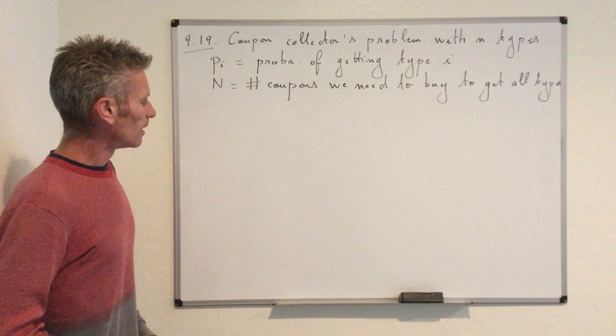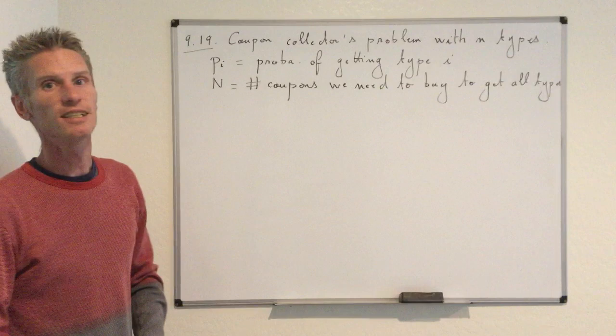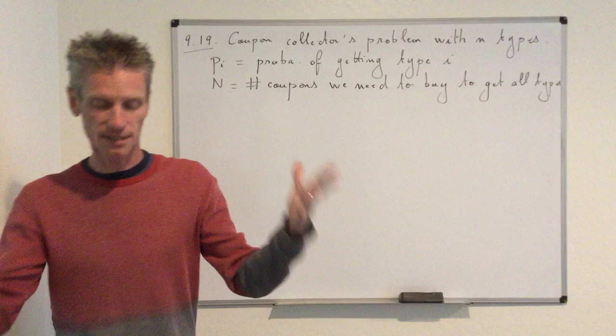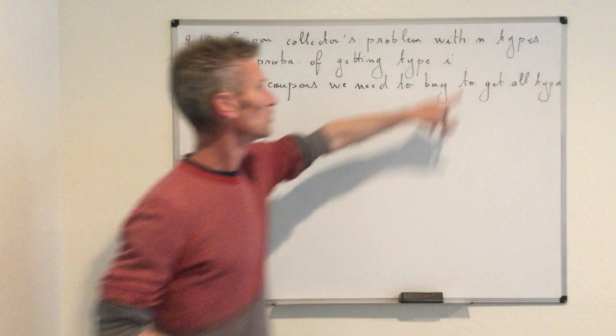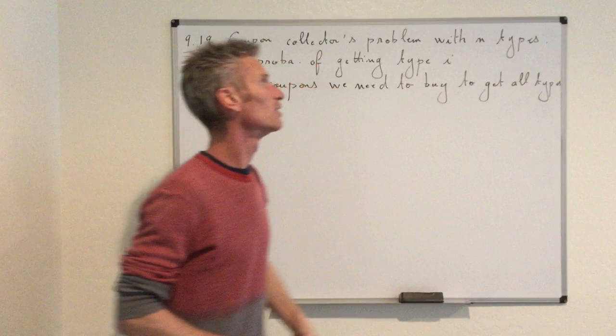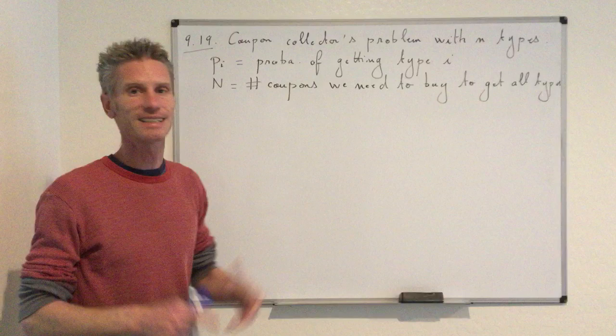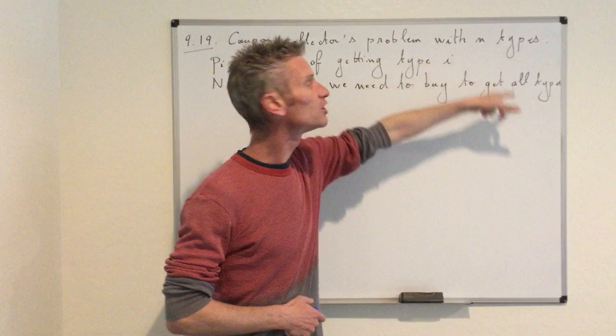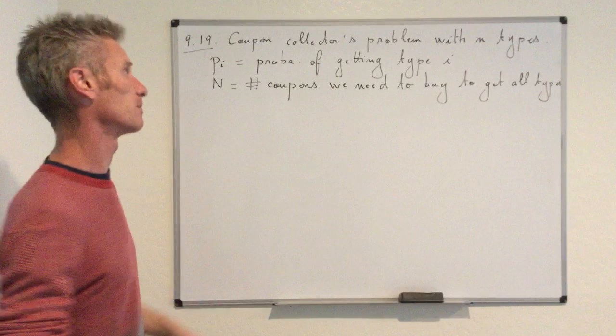This is a problem we already solved earlier in the semester using the linearity of the expected value. It's the coupon collector's problem, where we have coupons that you can buy. When you buy the coupons, you don't know which type you are going to get. We assume there are N different types, and we computed the expected number of coupons you need to buy before you get the full collection, meaning all N types. That was under the condition that each time you buy a coupon, it is equally likely to be of each of the N types.